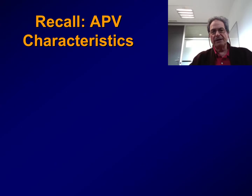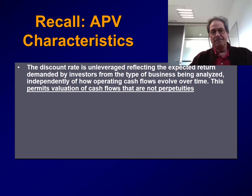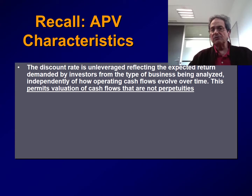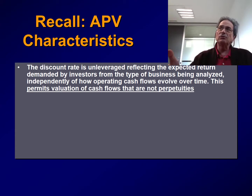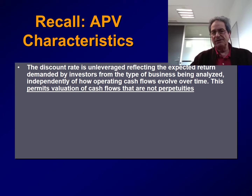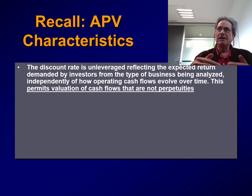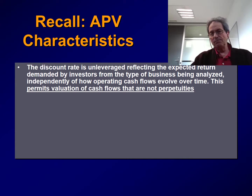First, remember the characteristics of APV. Under APV, the discount rate is unleveraged, reflecting the expected return demanded by investors from the type of business being analyzed. So we just discount unleveraged free cash flows after taxes at the after-tax asset discount rate, the unleveraged discount rate. We don't need to adjust the discount rate depending on whether the cash flow is a perpetuity or not, as is assumed with WAG.